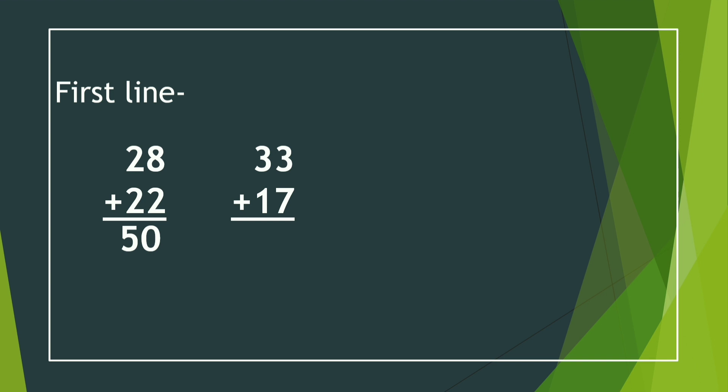For 33 and 17, we count after 7 up to 3, which gives 10. We write only 0, and the other 1 is added with our left side: 1 and 3 is 4, and 4 and 1 is 5, so it will also be 50. Next, 45 and 5. We add 5 and 5, and we know 5 and 5 will be 10.